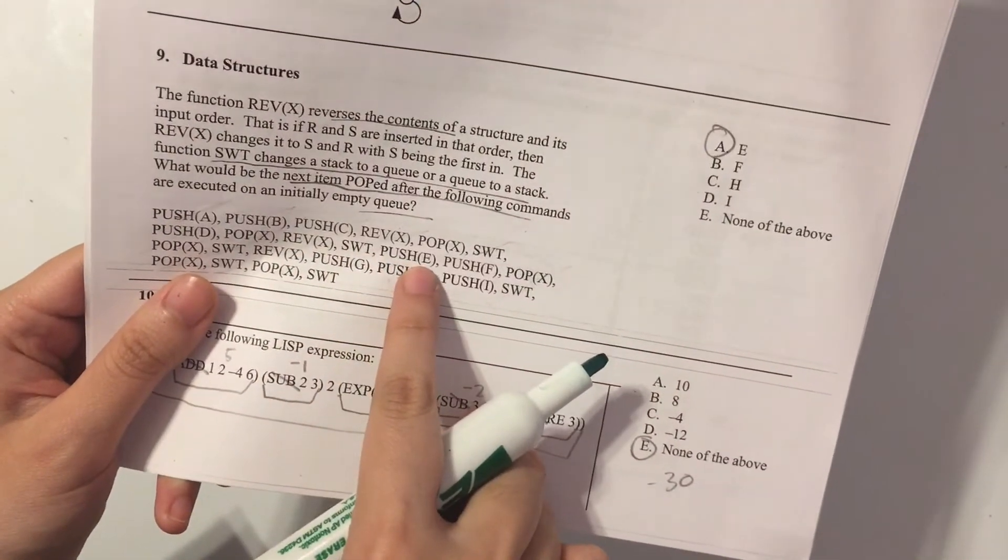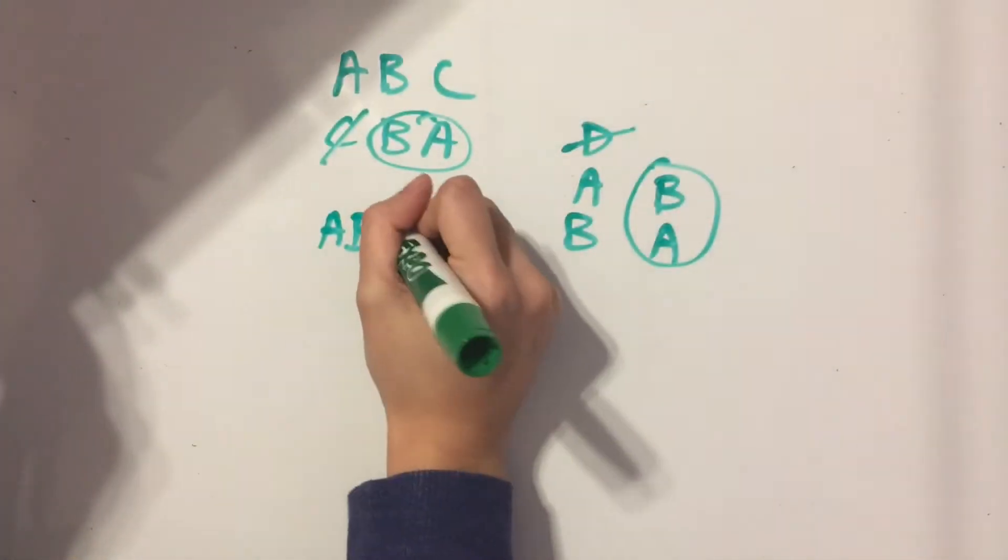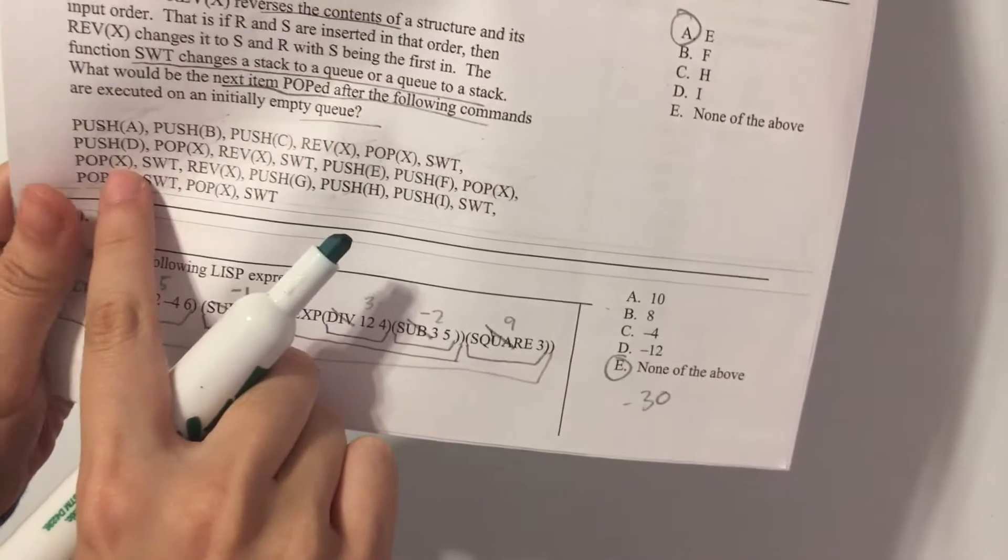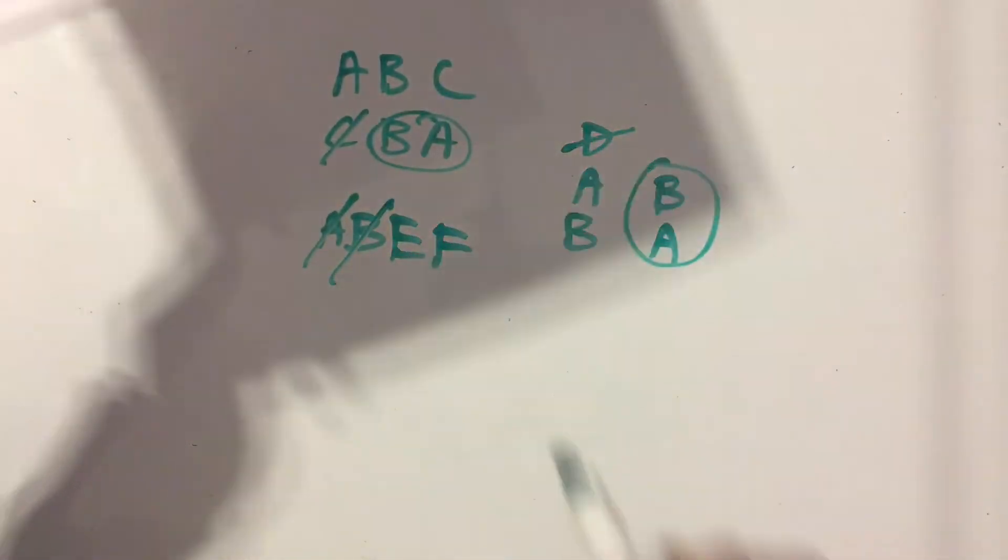Now we need to push E, F, and then pop whatever's in the front. So we're popping out A. Then we pop out whatever's in the front again. Goodbye B.